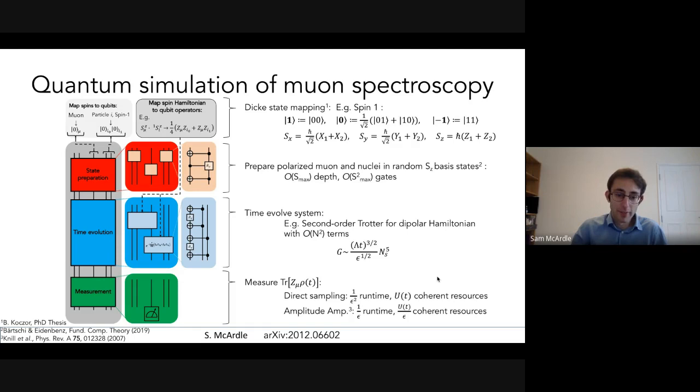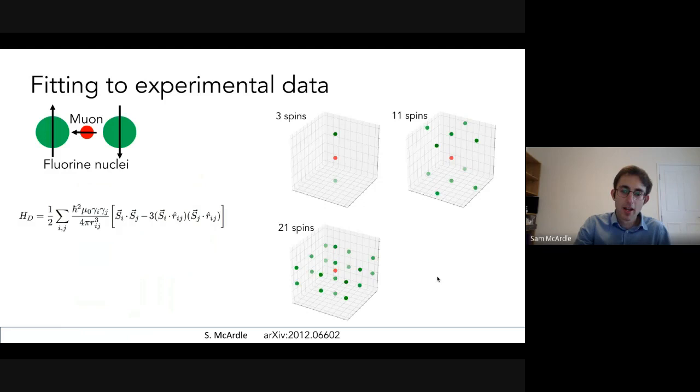And then finally, we just need to measure the muon spin, which we can either do through direct sampling, which doesn't need any additional circuit depth, but it might be a bit slow and need a lot of samples. Or if we want something a bit quicker, we can consider using these amplitude amplification type methods, which require much fewer samples, but you need a much longer coherent circuit depth available. So perhaps not a NISQ technique. So overall then, I think it's quite a simple algorithm to describe and it kind of naturally lends itself to trying to do some numerical emulations.